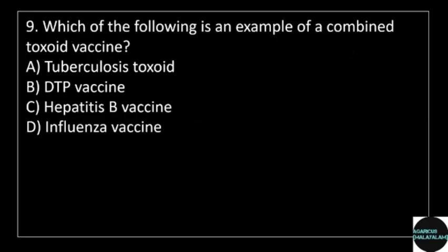9th question: Which of the following is an example of a combined toxoid vaccine? Answer options: option A, tuberculosis toxoid; option B, DTP vaccine; option C, hepatitis B vaccine; option D, influenza vaccine.